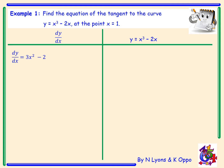Starting with our derivative, differentiating y we get 3x squared minus 2. To find the gradient we need to insert x equals 1 into our derivative, to get 3 times 1 squared minus 2. 3 take away 2 gives the answer 1. So at x equals 1, our gradient is 1.